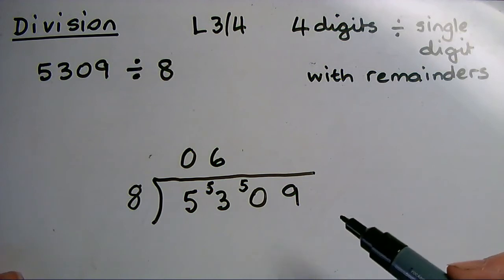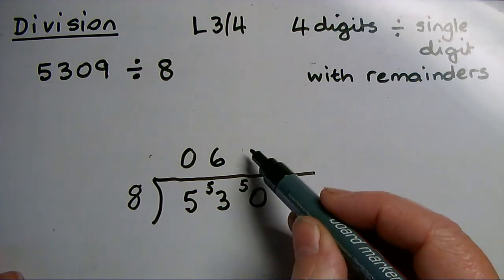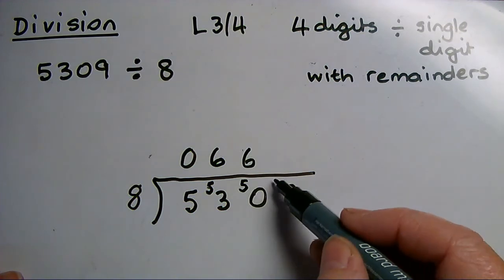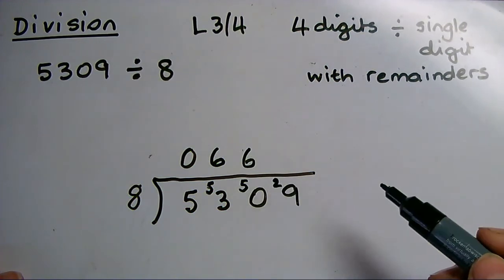Now it's, how many 8s can I get out of 50? Well again, 6 8s are 48, 49, 50. There's remainder 2. So I carry that across as well.